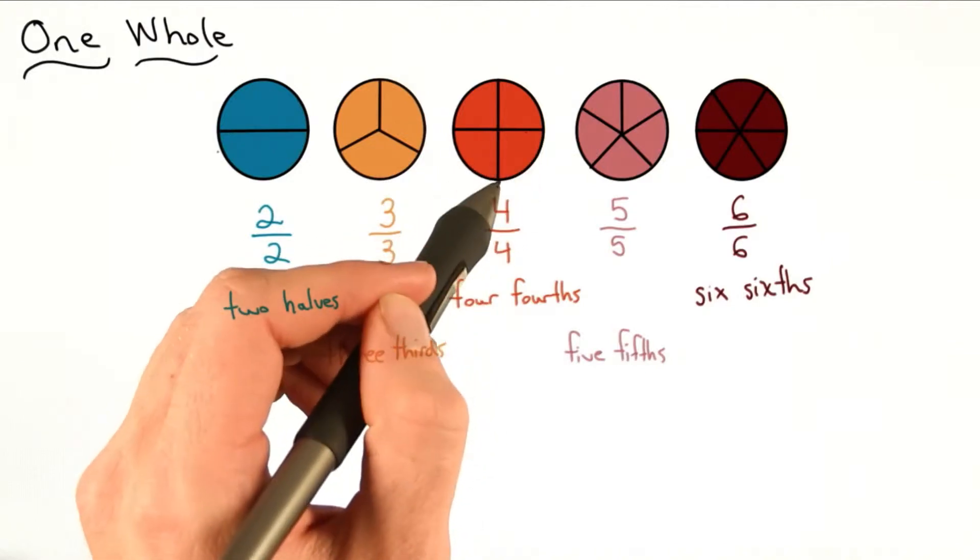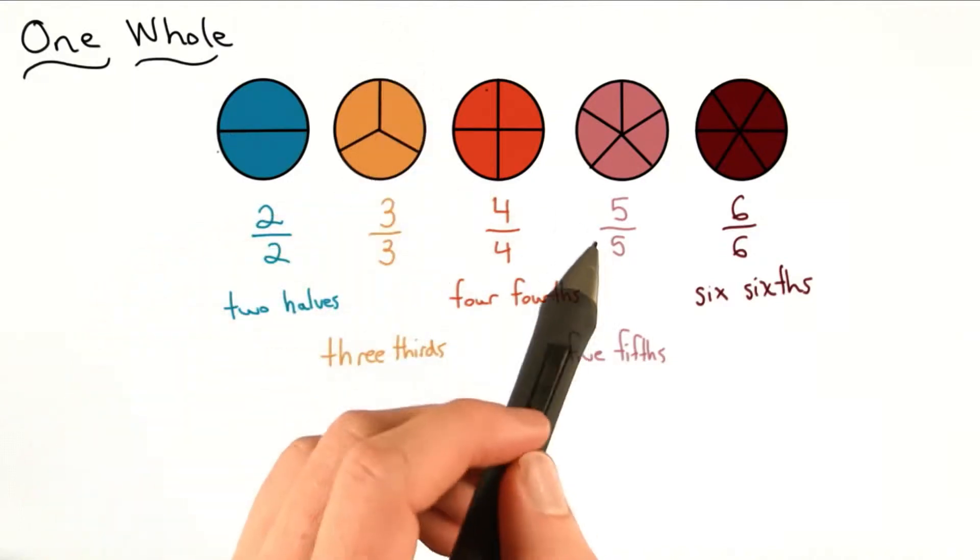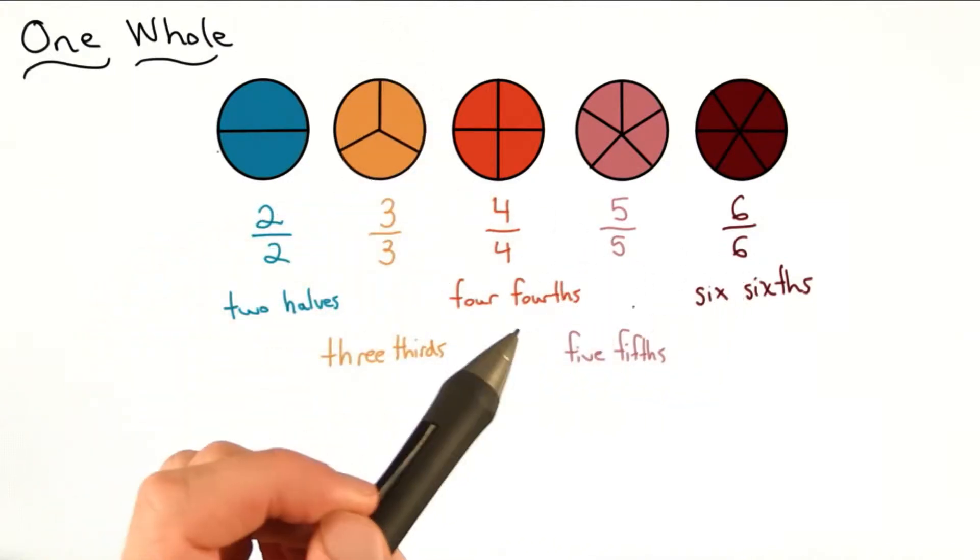Here I have 1 fourth, 2 fourths, 3 fourths, and 4 fourths. The same is true with the fifths and sixths. You can just count up the pieces.